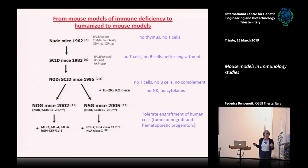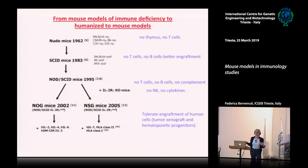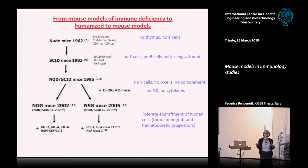The engraftment was not ideal, not optimal, so people kept searching for better models. This led to the discovery that crossing NOD-SCID mice to mice deficient in IL-2 receptor gamma — a receptor shared by many cytokines — gives rise to what is now called NSG mice. These animals are really good at tolerating engraftment of human cells. Reconstitution is still partial: not all immune cell subsets reconstitute at optimal levels, and there are still gaps, for instance in endogenous repertoire selection, since we still can't fully reconstitute thymic immune selection.